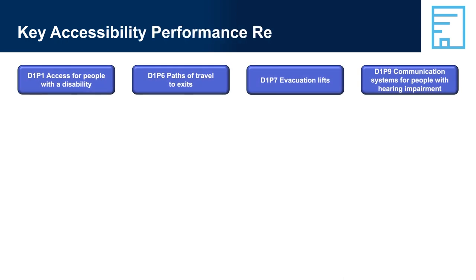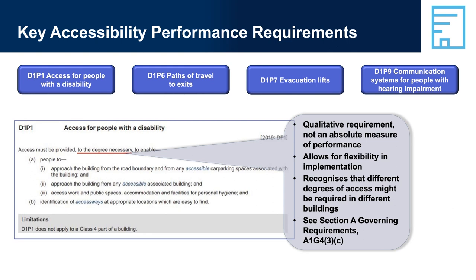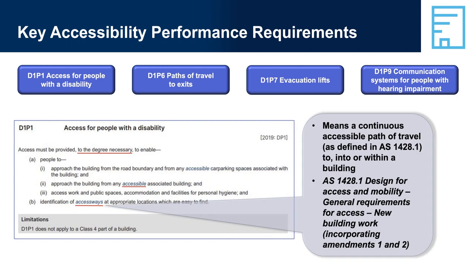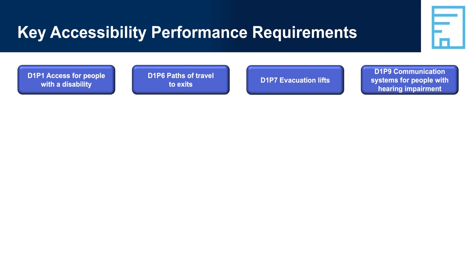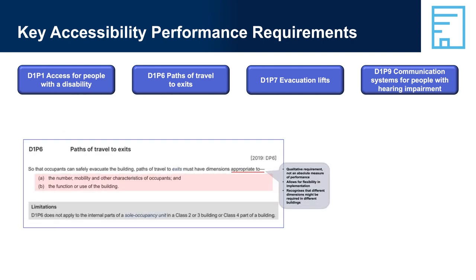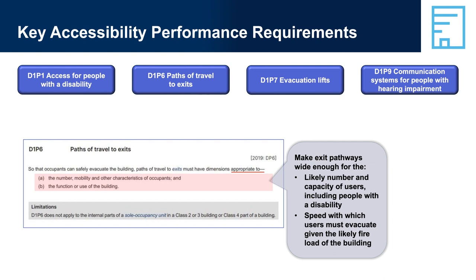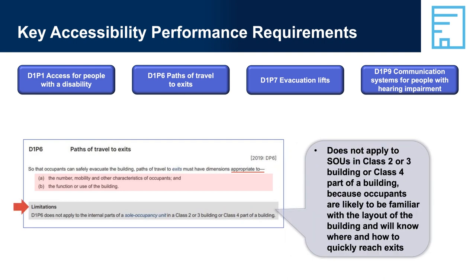Key accessibility performance requirements: most of these performance requirements are qualitative rather than quantitative — they specify an attribute that must be achieved, not an absolute value. For example, the performance requirement is that people can access the building and places within it; the requirement does not state how this access must be provided, as this will depend on the situation in the individual building. For example, D1P6 requires that paths of travel to exits are appropriate, but doesn't say exactly how long or short a path to an exit should be, or how complex a path would be considered inappropriate. You need to look at the building, how it will be used, who will use it, and make a determination about what kinds of exit paths are reasonable.